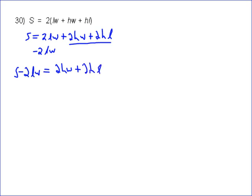We need to try to isolate this h, and when we isolate this h, we have to factor it out. So to factor out the h, you're going to get h times 2W plus 2L. We factor out that h because it's now isolated, and we're down to 1H, which is really good. Now to solve this, we have to divide both sides by 2W plus 2L.